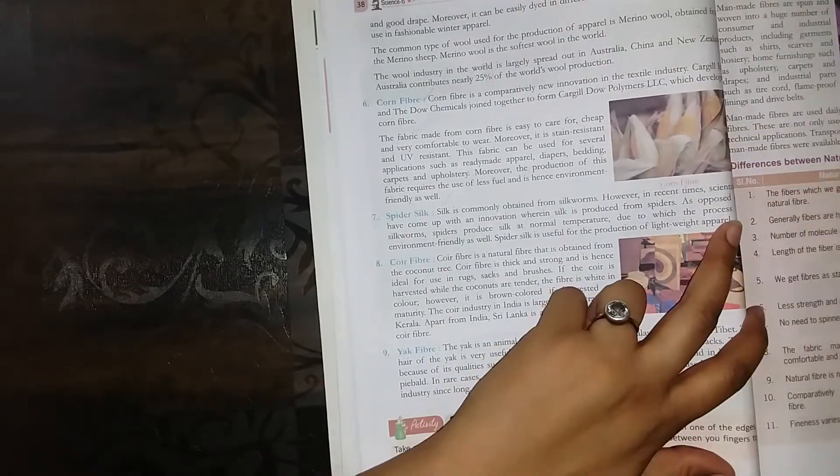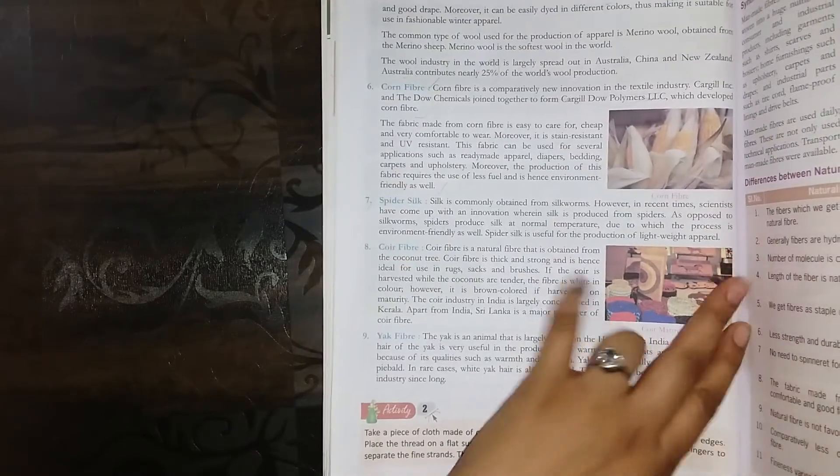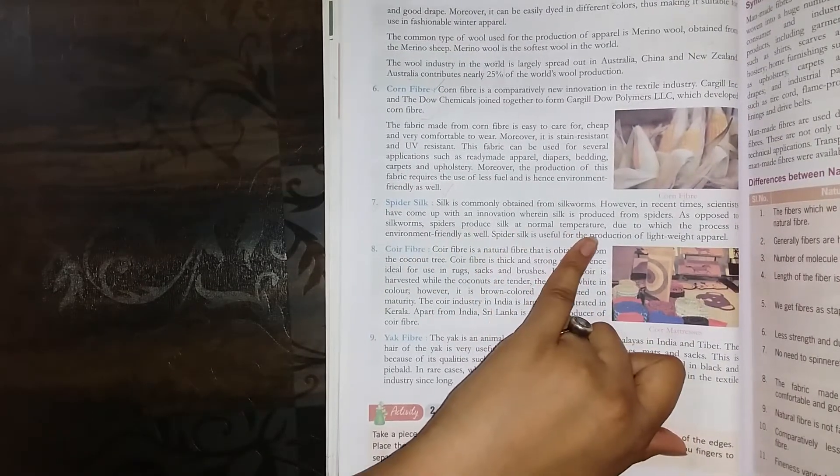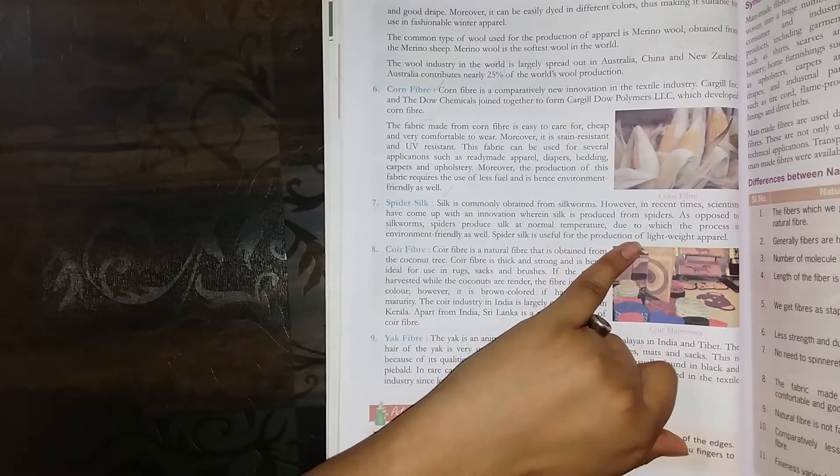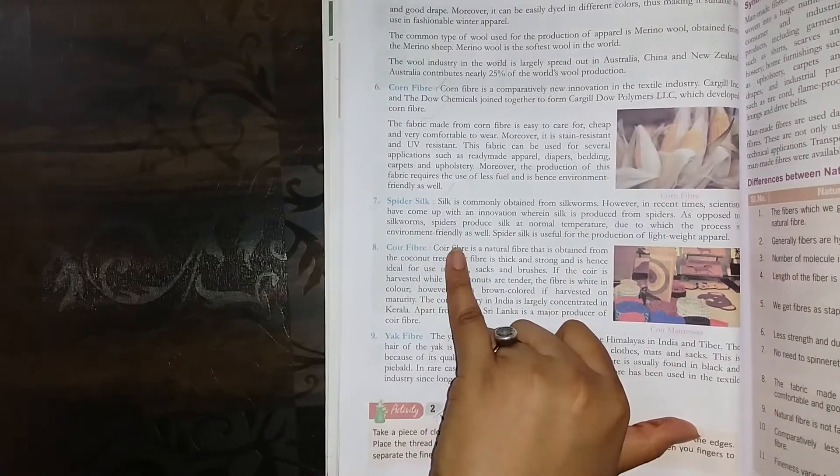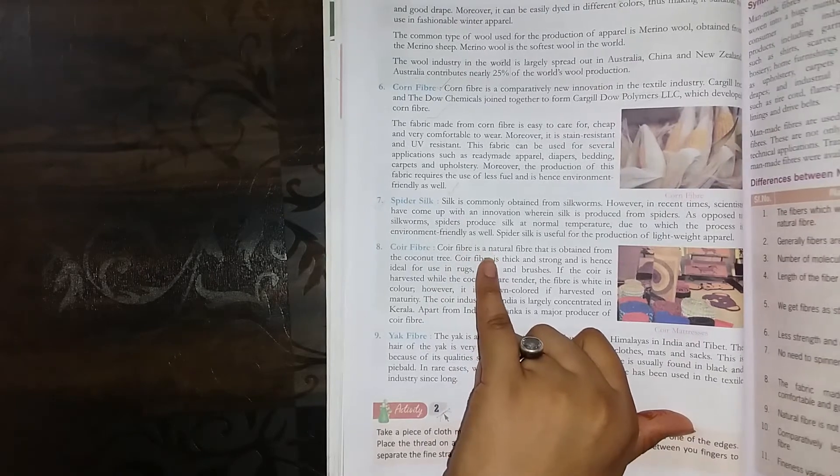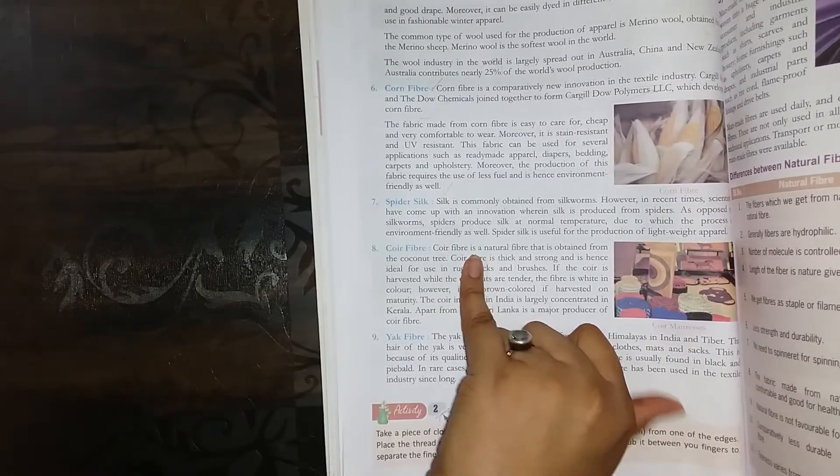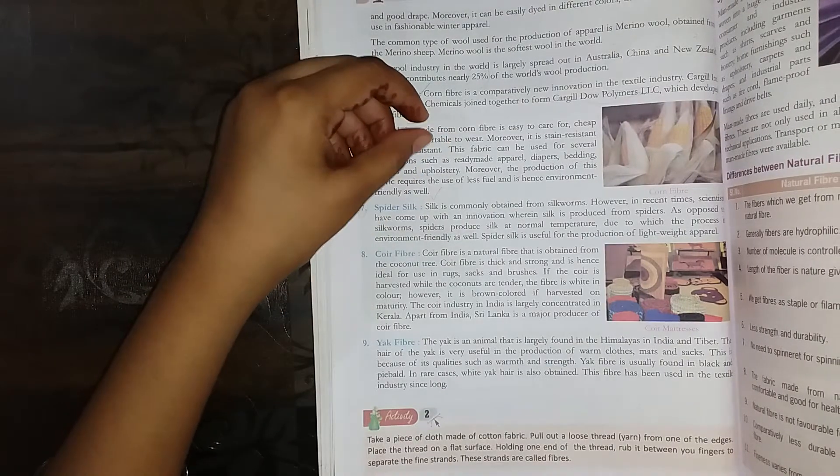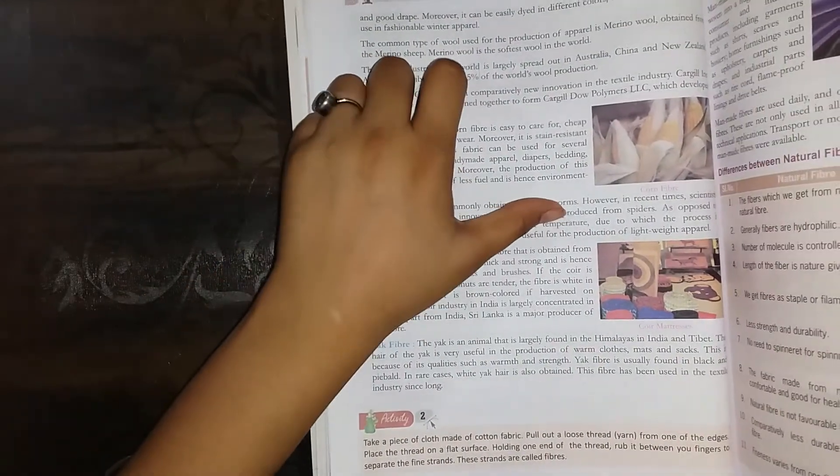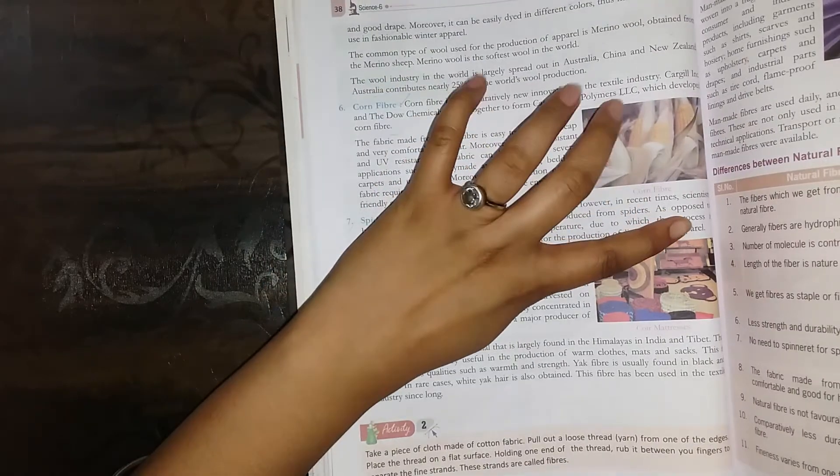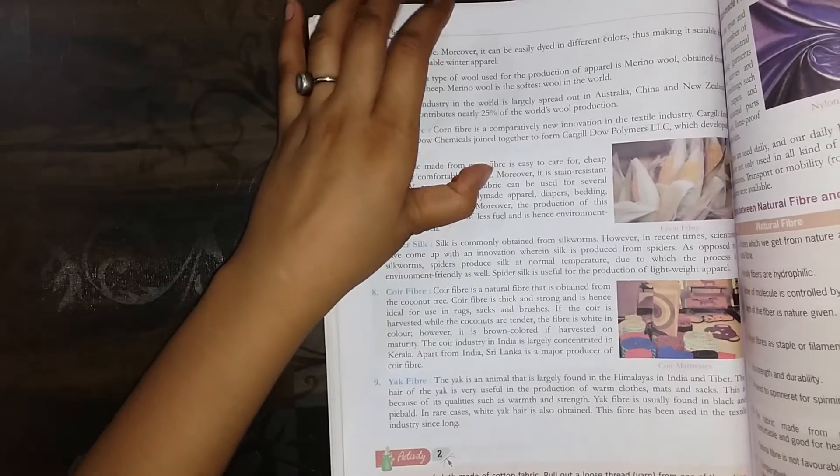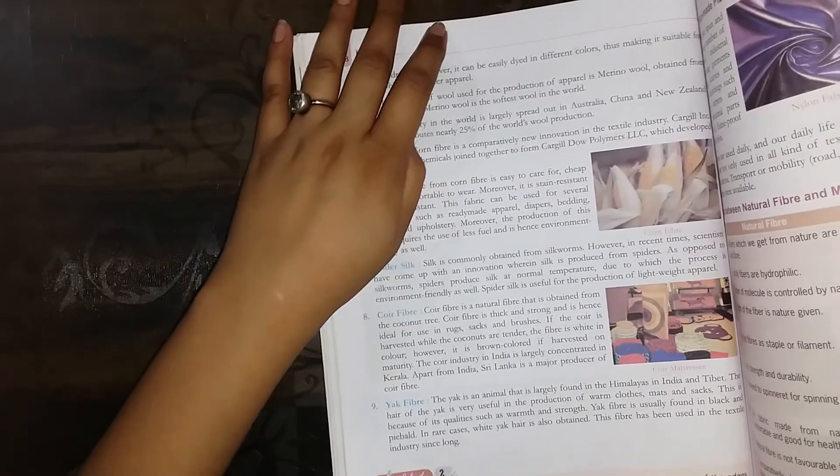As opposed to silkworms, spiders produce silk at normal temperature, due to which the process is environmentally friendly. This spider silk is used for producing lightweight apparel. Spider silk is also used in lightweight clothes.